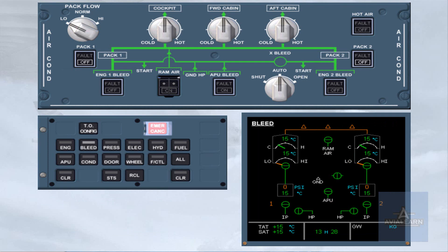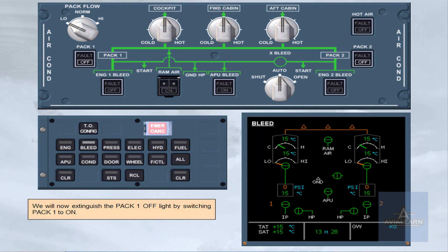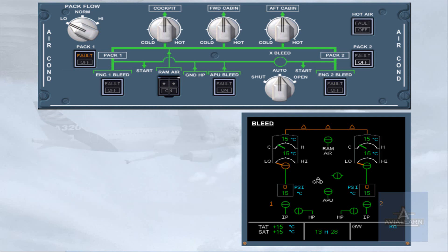We will now extinguish the PAC1 off light by switching PAC1 to ON. Notice the amber fault light on the PAC1 push-button switch and the control valve indication switching from green to amber. Both of these amber indications occur because PAC1 is ON but no bleed air is available to it.